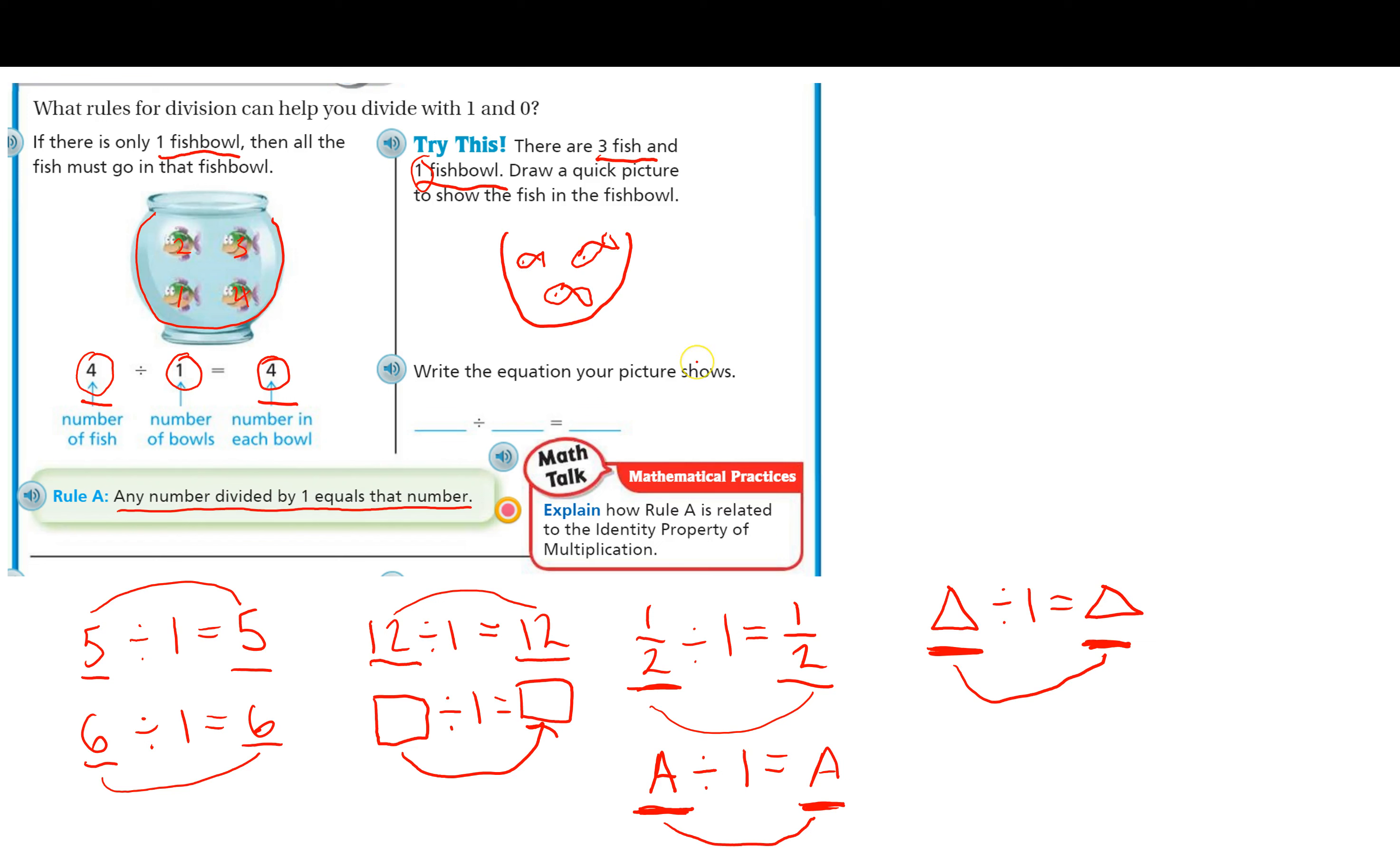So let's write an equation that the picture shows. Well, again, just like over here, this first number is going to represent the number of fish. So there are 3 fish. The second number is going to represent the number of bowls, just like it did over here. There's 1 bowl. And again, just like we were showing on all the other problems, anytime you have a number divided by 1, you're going to get that same number.